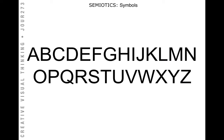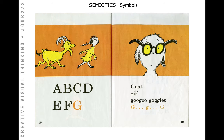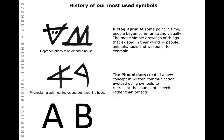All that is necessary for any language to exist is an agreement amongst a group of people that one thing stands for another. Our alphabet is a physical representation of sounds in our language, only because the Phoenicians decided certain things meant a certain sound, and that carried over through generations. We're taught these symbols early in childhood, that repetition goes into our long-term memory, and it all comes back to pictographs and the Phoenicians.